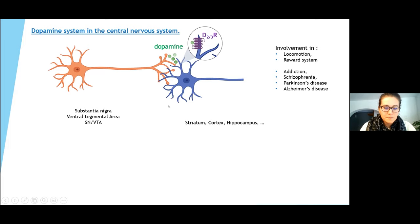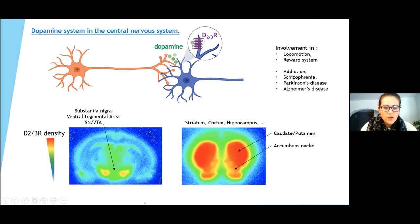Among the dopamine receptors, we are interested in the D2/3R receptors. Their density can be measured ex vivo or in vitro in the substantia nigra and also in the striatum.